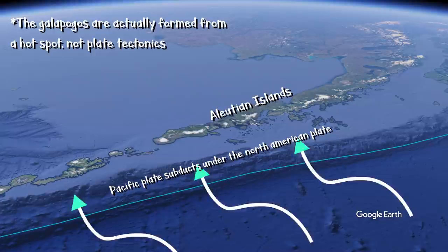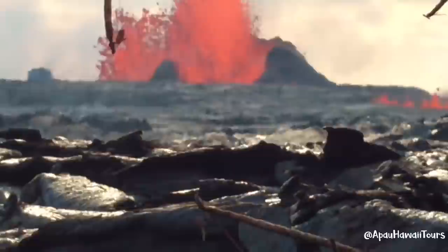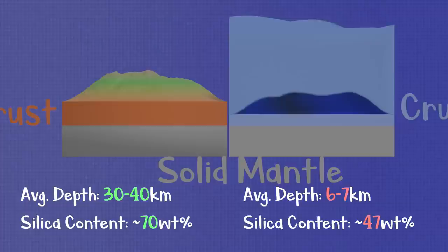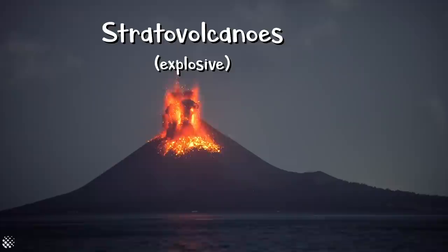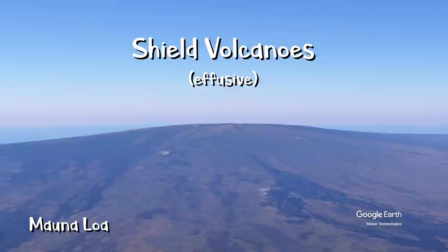However, when magma rises through and interacts with continental crust, not only is continental crust thicker, it also has a high silicon content. Incorporating the silicon makes the magma more felsic and thus more viscous. An easy way to determine the eruption type of a volcano is by its shape. Steeper volcanoes or stratovolcanoes generally are explosive, whereas shield volcanoes with low grades and wide bases are effusive.